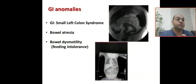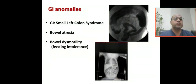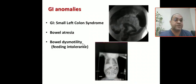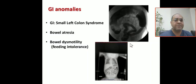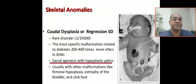GI anomalies associated with infant of diabetic mother include small left colon syndrome — you can see the colon is very small. Also bowel atresia, bowel dysmotility, and feeding intolerance can occur.